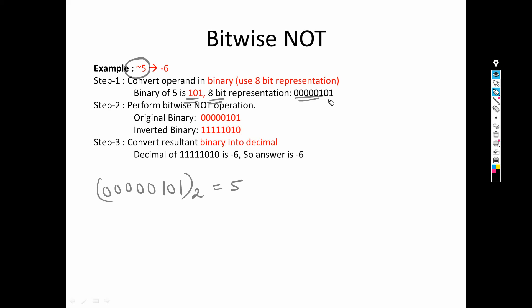Now we perform the bitwise NOT operation. NOT converts each bit: if it is 0, it becomes 1; if it is 1, it becomes 0. This is inversion — we reverse every bit. So on our original 8-bit value, 1 becomes 0, 0 becomes 1, 1 becomes 0, and all the remaining zeros become 1. The resulting binary value after performing bitwise NOT on 5 is 11111010.